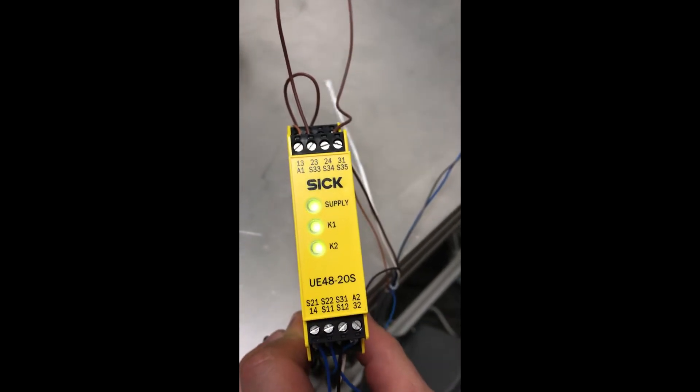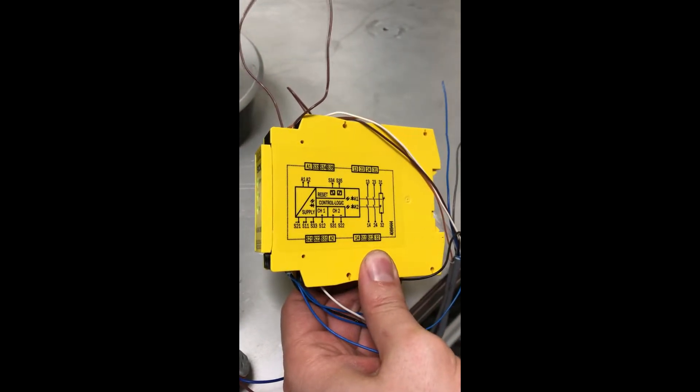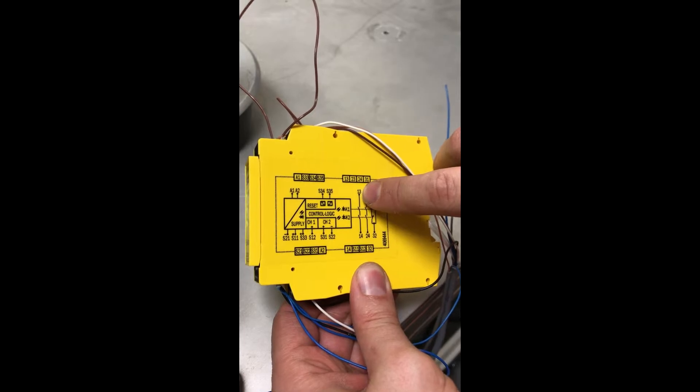In order to accomplish this, we utilized a SICK safety relay. This is a UE4820S. The control circuit that we're using for stopping and starting the universal robot is the e-stop circuit.